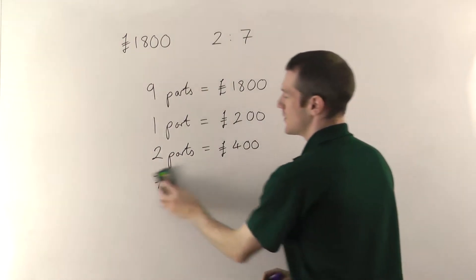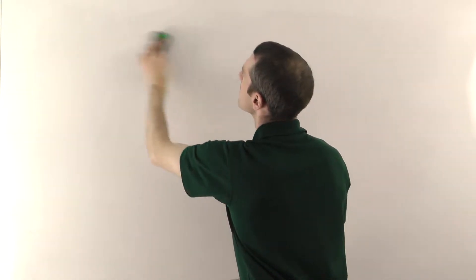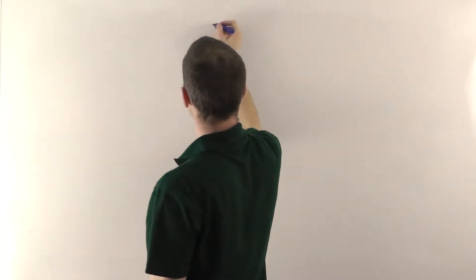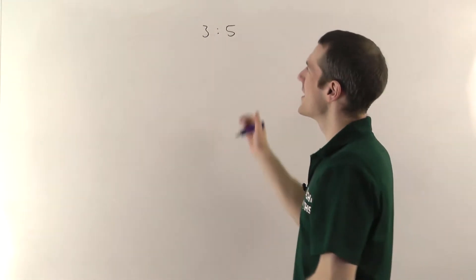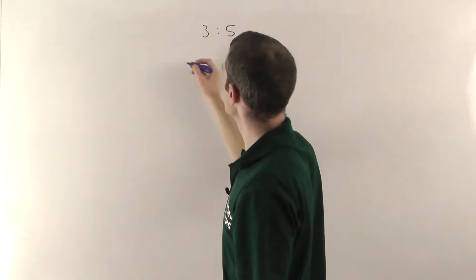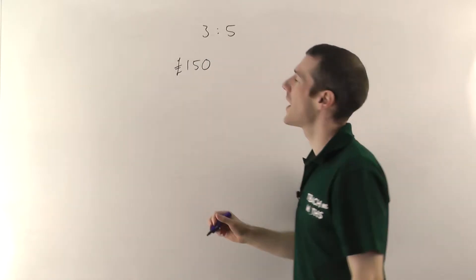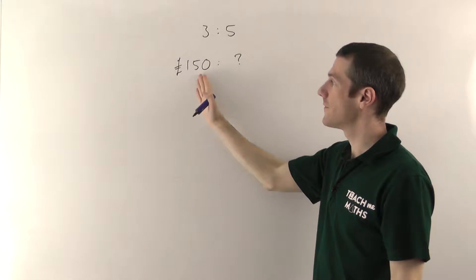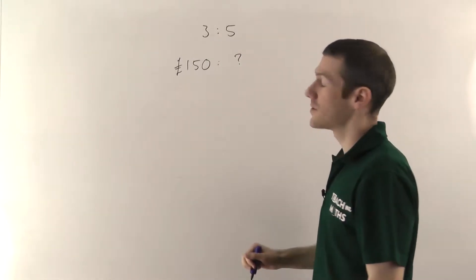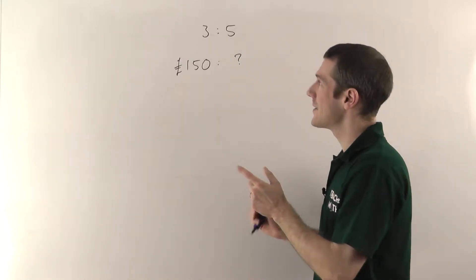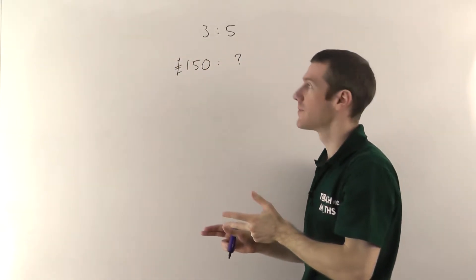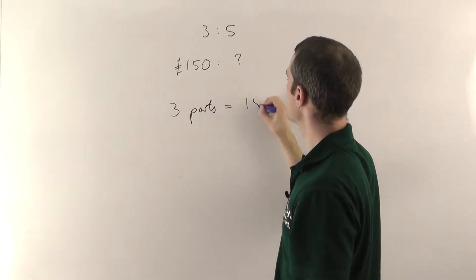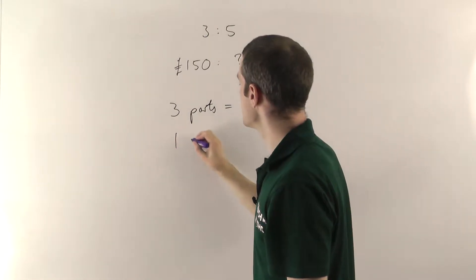Let's do a slightly harder example. We've got two people who split up some unknown total amount of money in the ratio three to five. What we're told is that the first person is given 150 pounds, and we have to work out how much the second person gets. The principle is still the same — we find out how much one part is worth — but we don't have the total amount of money. What we know is that three parts equals 150 pounds.